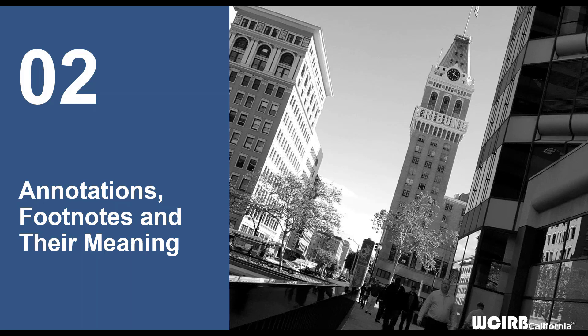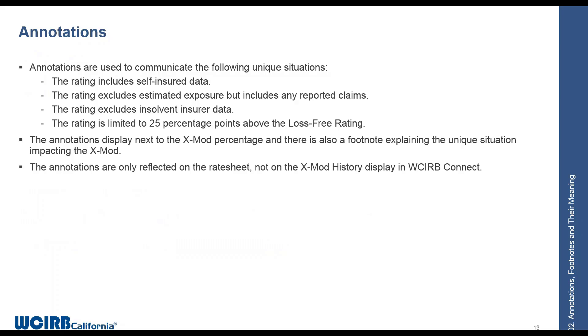Along with the information in the rate sheet we've gone over, there are also annotations and footnotes that describe special circumstances. We use four different annotations in the rate sheet. The first is to include self-insured data — the policy or USR information will appear on the rate sheet, but there won't be any indication it was self-insured, so we put an annotation in to note that.